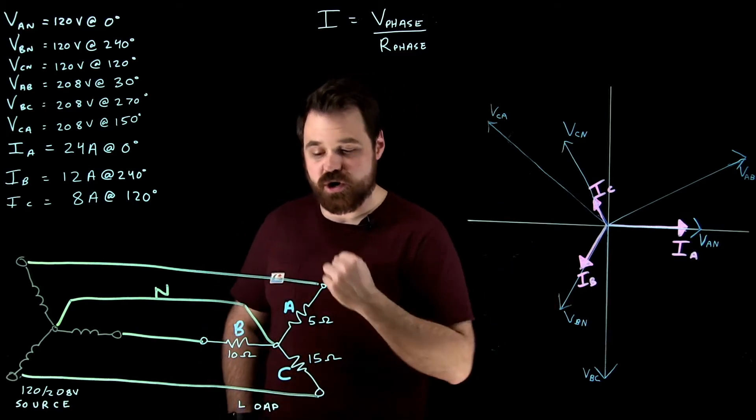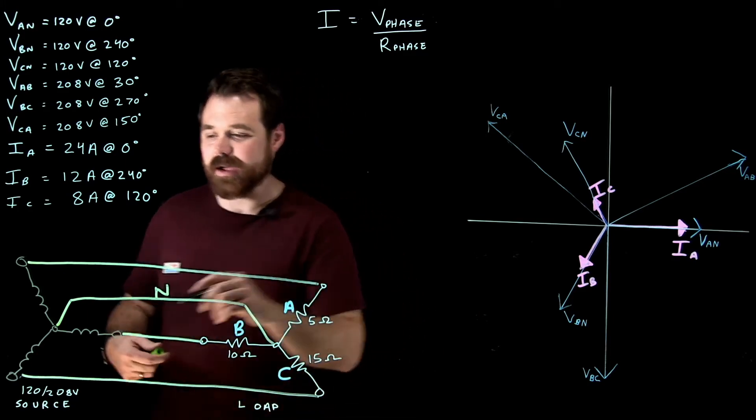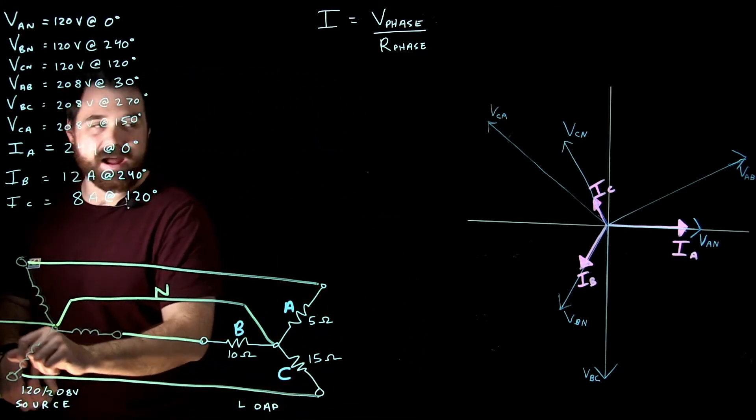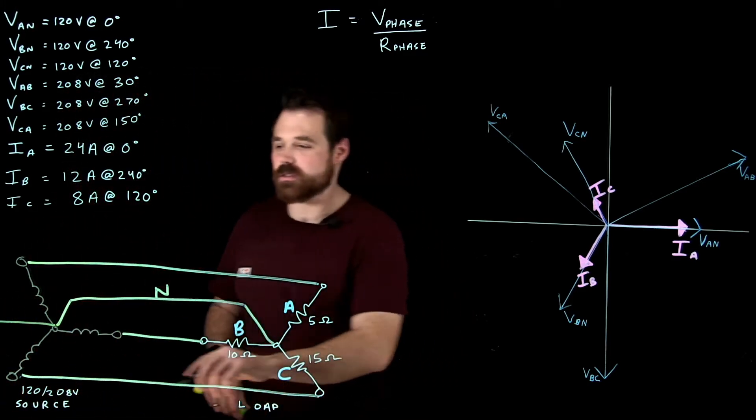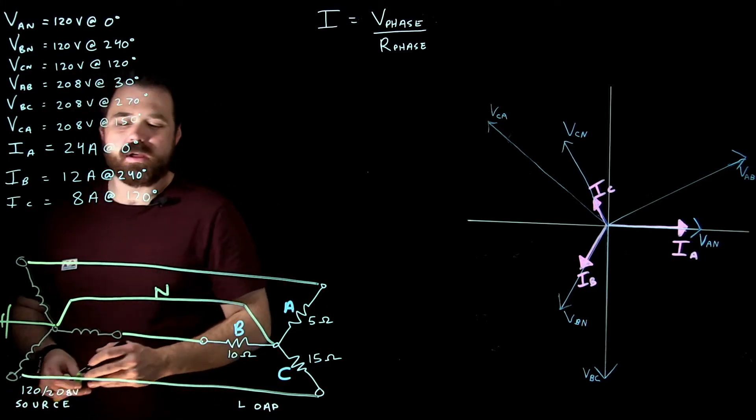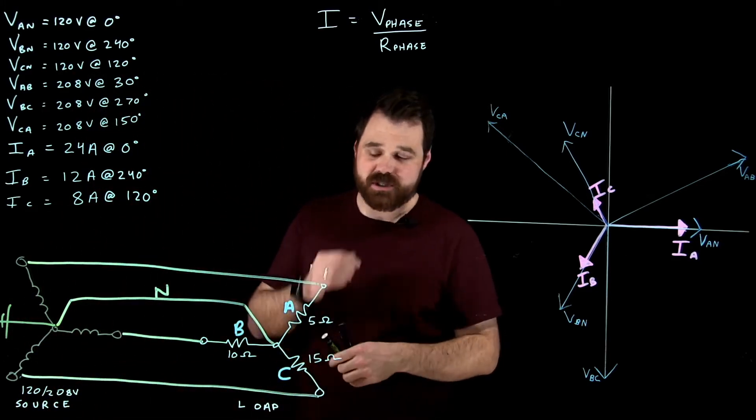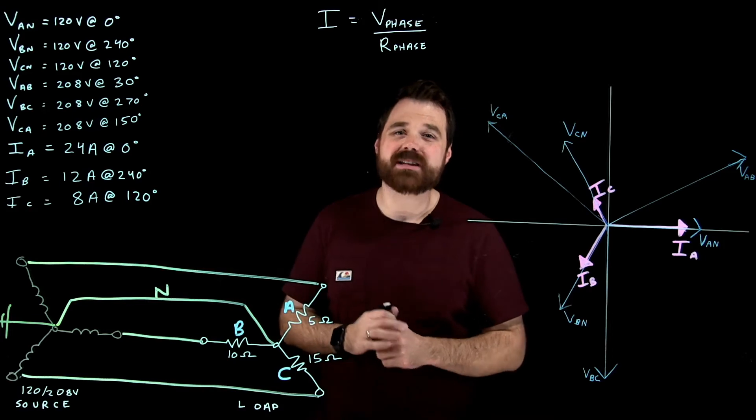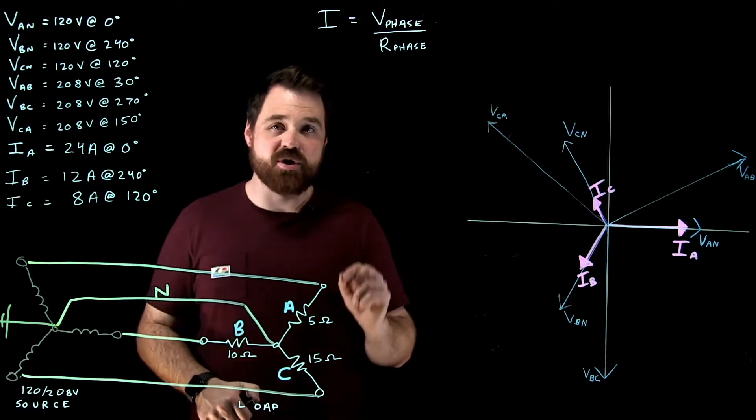So because we have that neutral conductor, which back at the source is grounded, it's connected to ground, we maintain those voltages. What I want to do now is I want to calculate the neutral current.